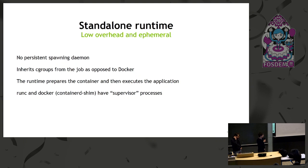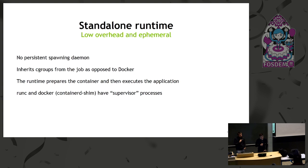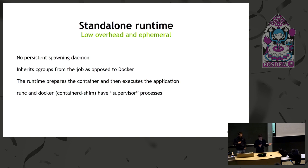We wanted a standalone runtime with low overhead — no daemon, no persistent spawning daemon. We inherit all cgroups from whatever was above us: it could be systemd, Docker if we're running root inside Docker, or Slurm in our case. In Docker, people are often confused because you use cgroups from the Docker daemon, not from the docker run command — and that's the behavior we wanted. After the runtime executes the application, it execs the app and disappears — no other process hanging around like runc or Docker, which handle pty or container tracking.